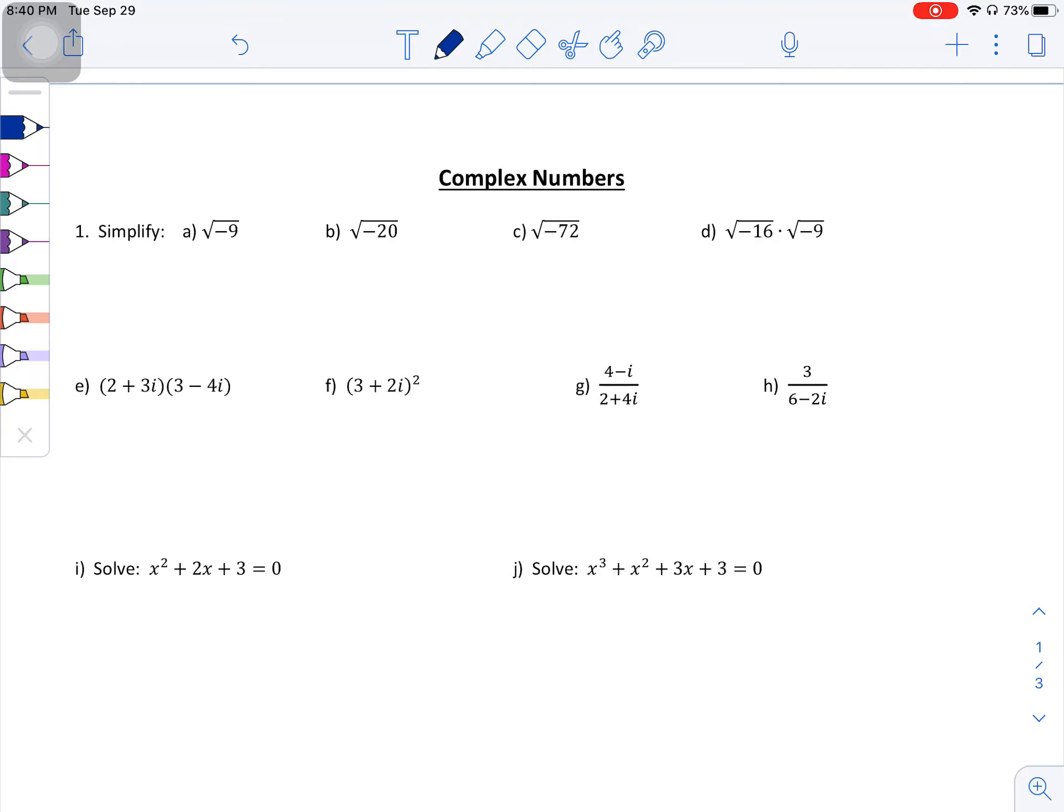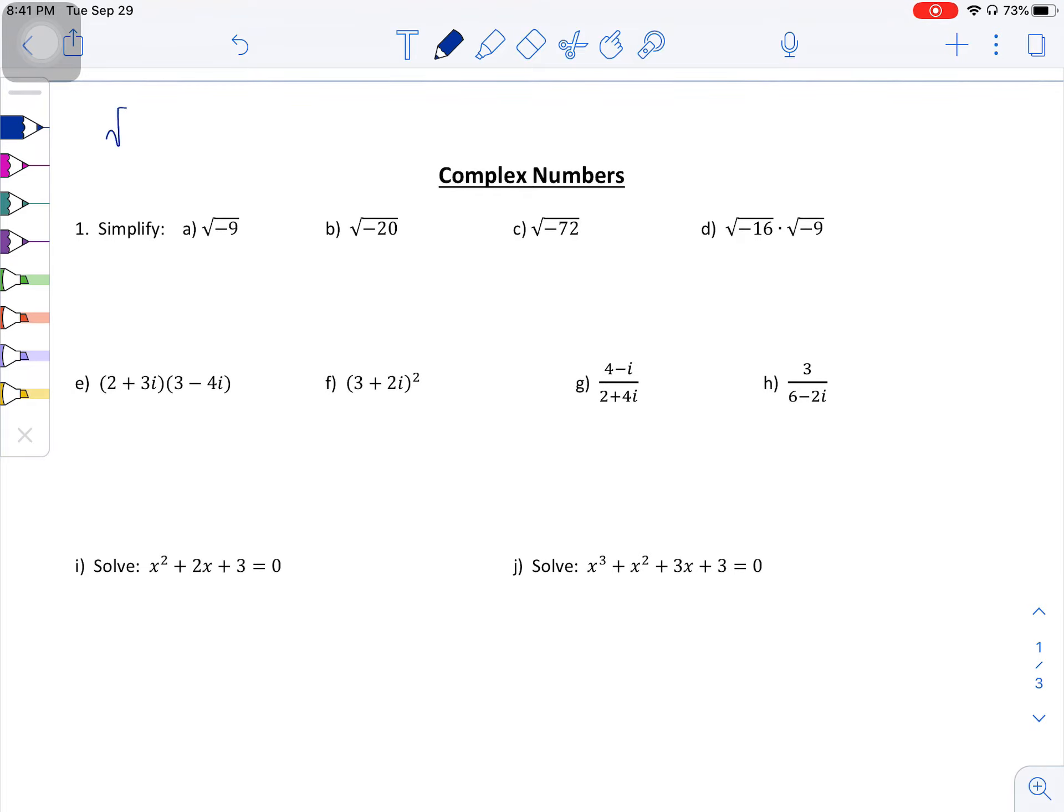The first thing we need to know is a complex number. Complex numbers are defined as the square root of negative one is equal to i. These are your imaginary numbers. Imaginary numbers are useful. They're fabulous. They're wonderful numbers. You just can't draw them on the real number line.